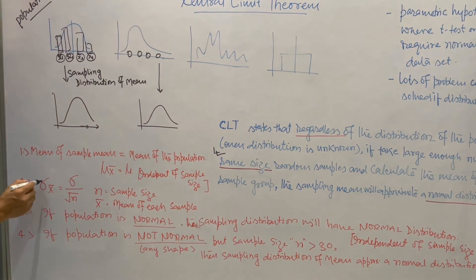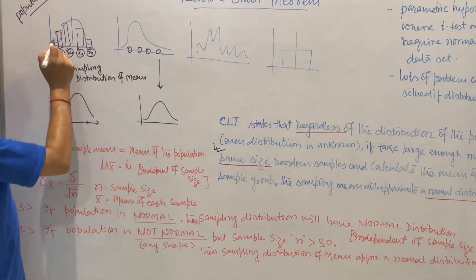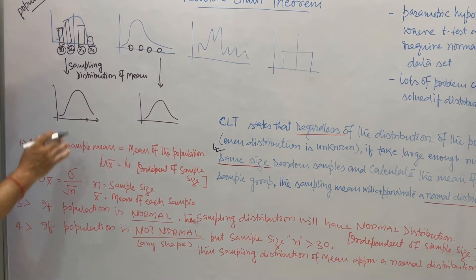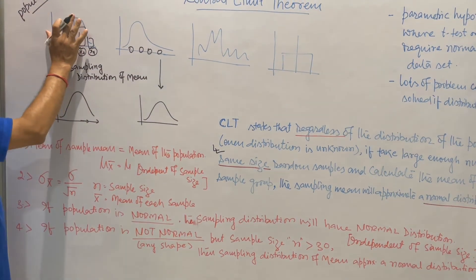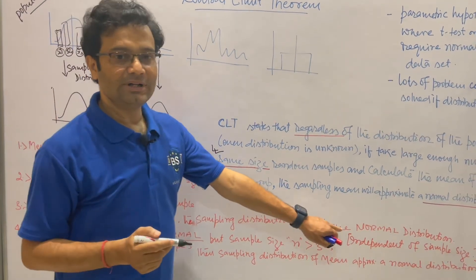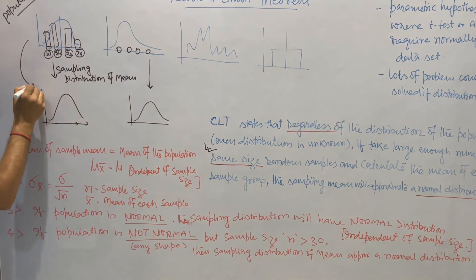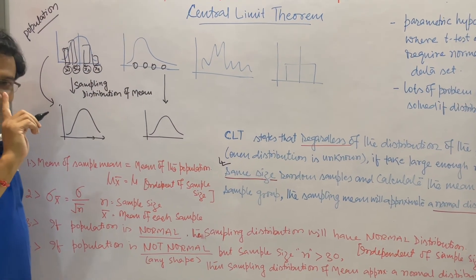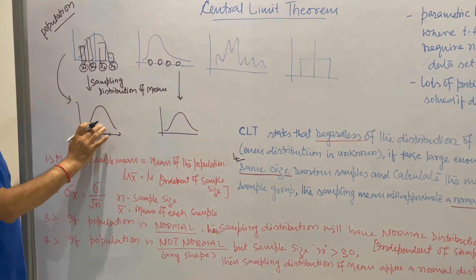The second point says that the standard deviation of all the sample means equals a specific formula. If any two things are given, you can find the third using this formula when applying the central limit theorem. The third point says: if the population is already normal, then the sampling distribution of the mean will also have a normal distribution, independent of sample size — though all sample sizes should be the same.